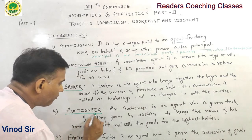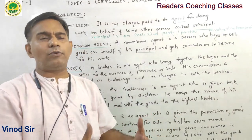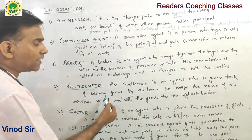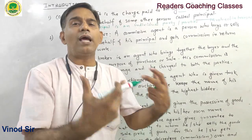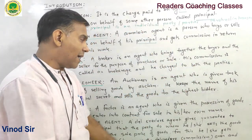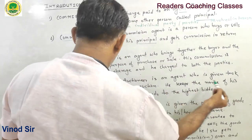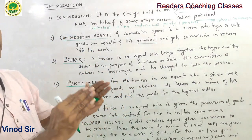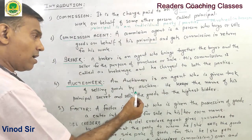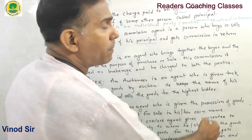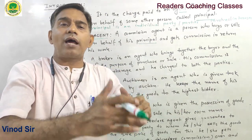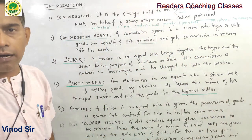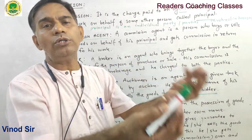An auctioneer is an agent who is given the task of selling goods by auction. The auctioneer keeps the name of his principal secret and sells the goods to the highest buyer — that is, the buyer who offers the highest amount for the goods.